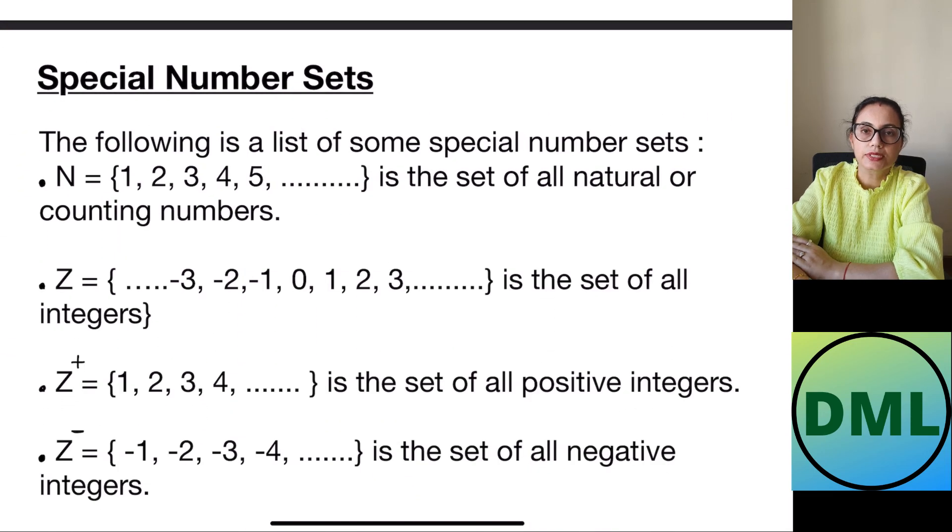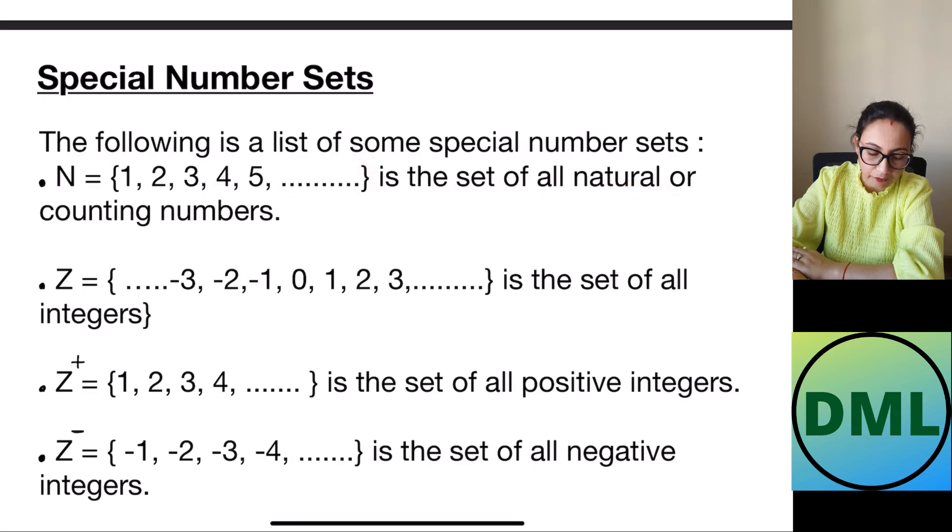We are going to see some special number of sets we have. The following is the list of some special sets. First N is the natural number. What are natural numbers? 1, 2, 3, 4 is the set of all natural numbers and it keeps on going is the set of natural or the counting numbers.